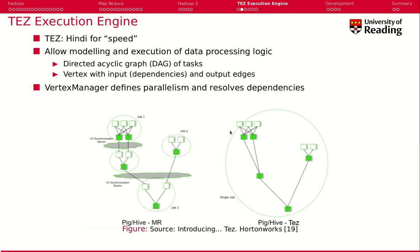Here we see a directed acyclic graph. A node represents some kind of computation, and an edge is the dependency between the computation. For example, this node here could mean: add the result of this node with this node together, simply speaking.